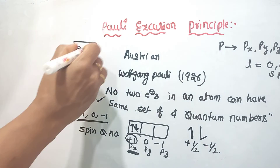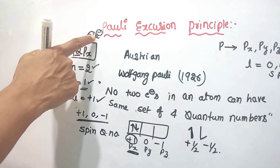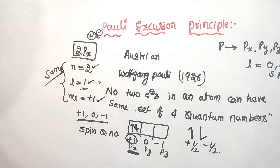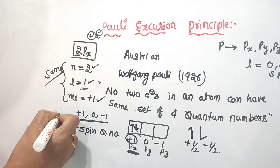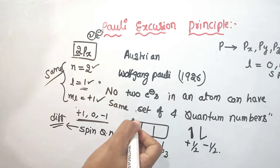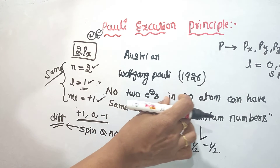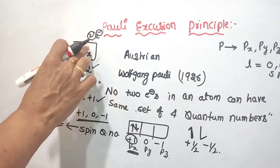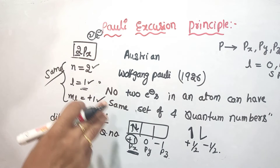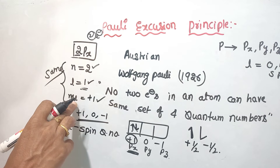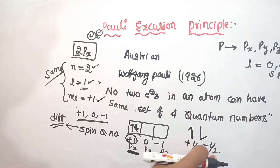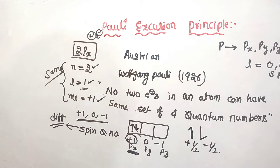Let's look at 2 electrons in the 2px orbital. These 2 electrons will have 3 quantum numbers — the principal quantum number, azimuthal quantum number, and magnetic quantum number — that are the same. The spin quantum number will be different.